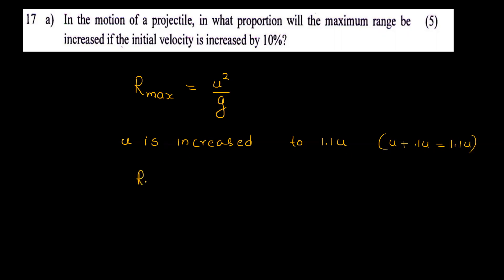That is equal to 1.1u all square. We will have 1.1u square by g, which equals 1.21 u square by g, which equals 1.21 R max.